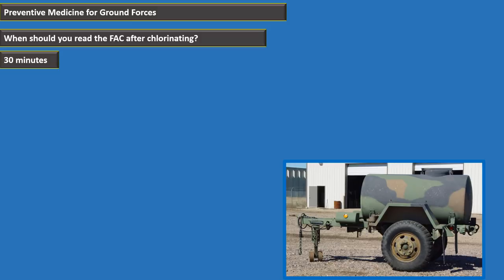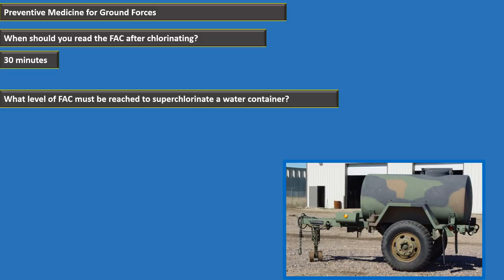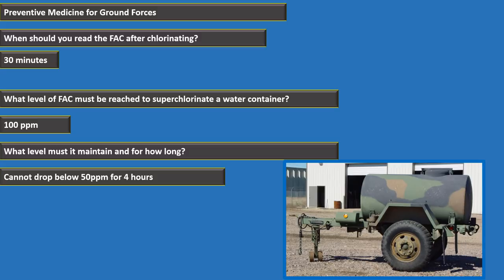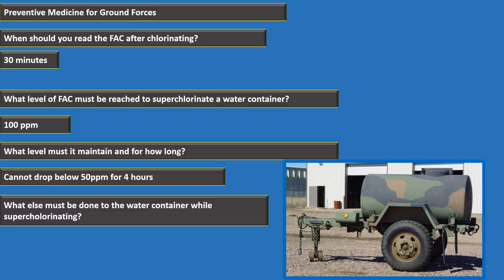To super-chlorinate a water container, the chlorine must reach 100 parts per million, maintain at least 50 parts per million, and be held for at least four hours. During super-chlorination, the word 'POISON — DO NOT DRINK' must be clearly marked on every side of the container and on any water outlets or spigots.